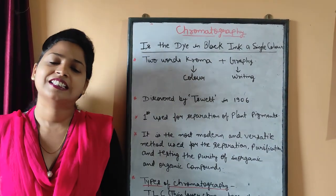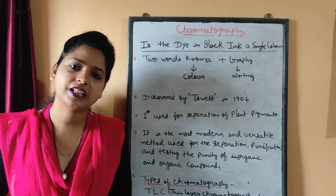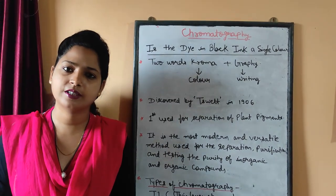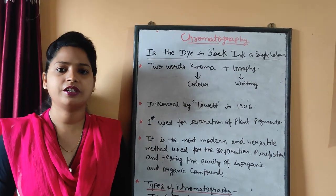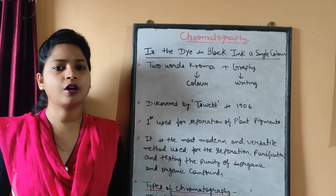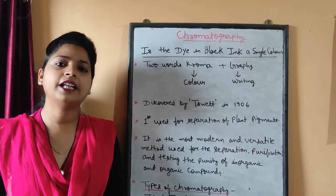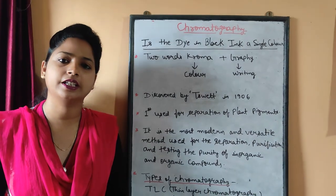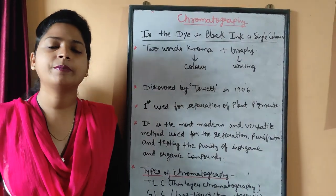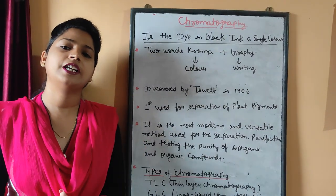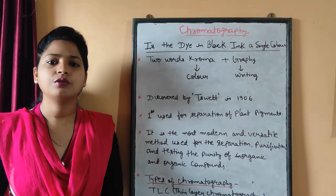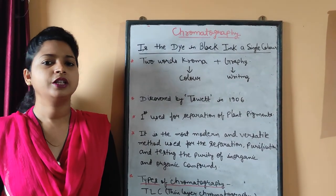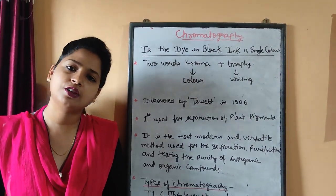Hello students. In the last lecture of this chapter, 'Is Matter Around Us Pure,' we discussed the centrifugation technique and the separation of two immiscible liquids. Today we are covering the next separation technique — the separation of different colors from a dye. In your NCERT book, black dye is given, but this process is used to separate all the colored components present in a specific color. Except for primary colors, all colors are made up of several kinds of color by the mixing of various colors. So how can we separate the different colors present in a specific dye? For that we use a method known as chromatography.